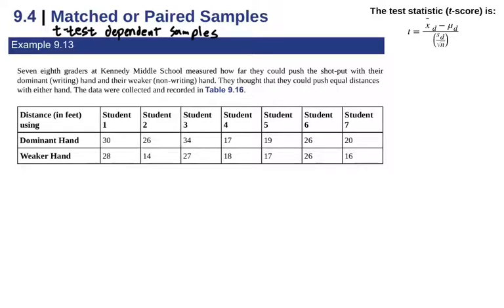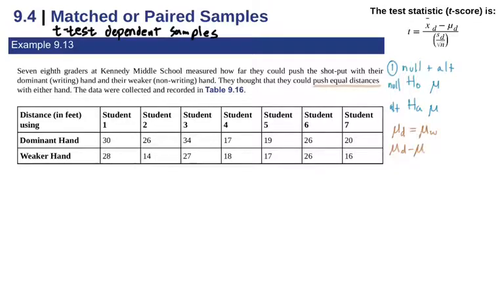We don't want to mix these up out of order — we want to make sure they're combined as matched pairs. Before we do a full hypothesis test, let's look at the first step: setting up the null and alternative. We're comparing means using mu. We want to look at the differences between the two to see if one hand throws further. We're trying to figure out if they push equal distances, so mu of the dominant hand equals mu of the weaker hand. Using algebra, we subtract mu_w from both sides.